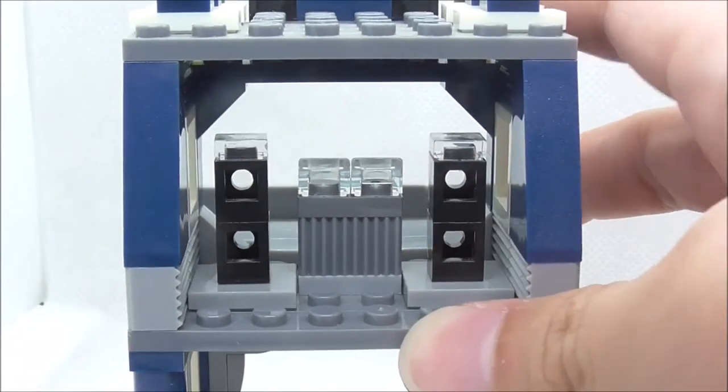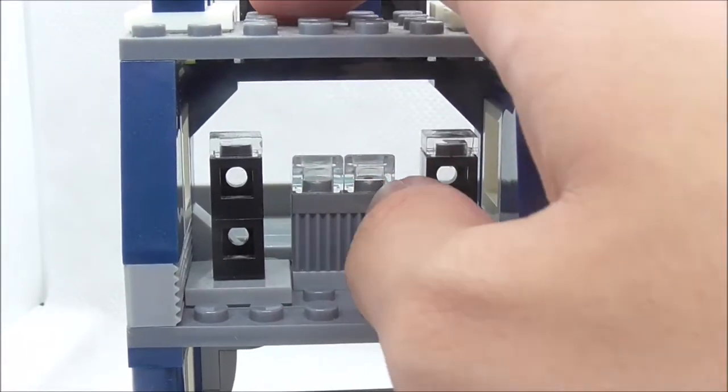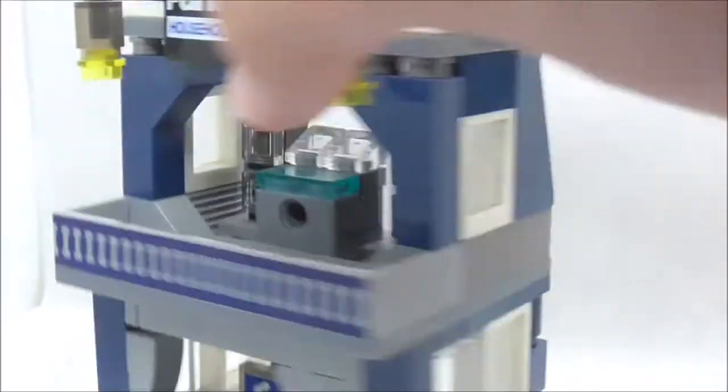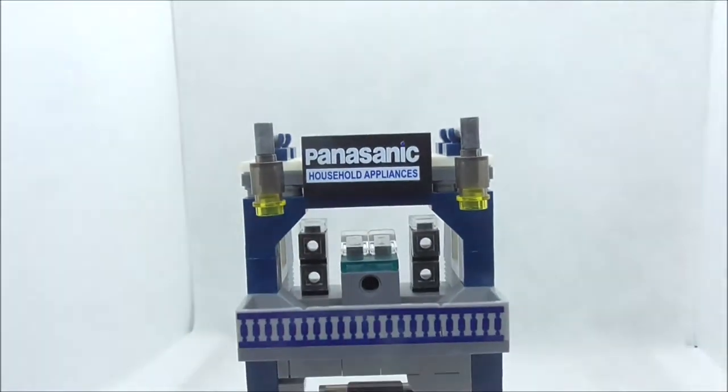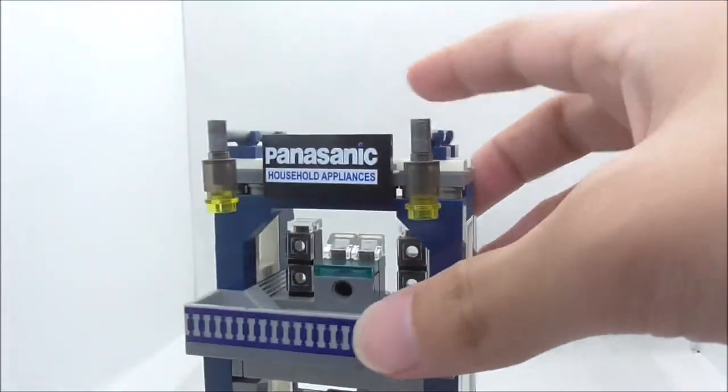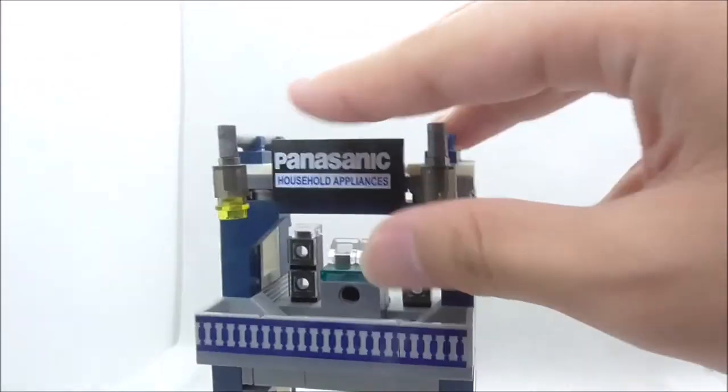This is how it looks from the back—you have this texture piece right here. At the very top on the roof, you have these lights which are clipped on and you can adjust them if you want.